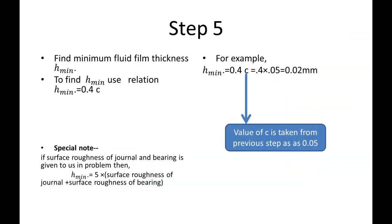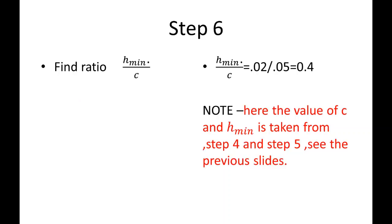In the next step, we will find the minimum fluid film thickness denoted by h_min using an empirical relation as shown. In the following step, we will calculate the ratio of minimum fluid film thickness to radial clearance, h_min by c, using the values of h_min and c from the previous step.